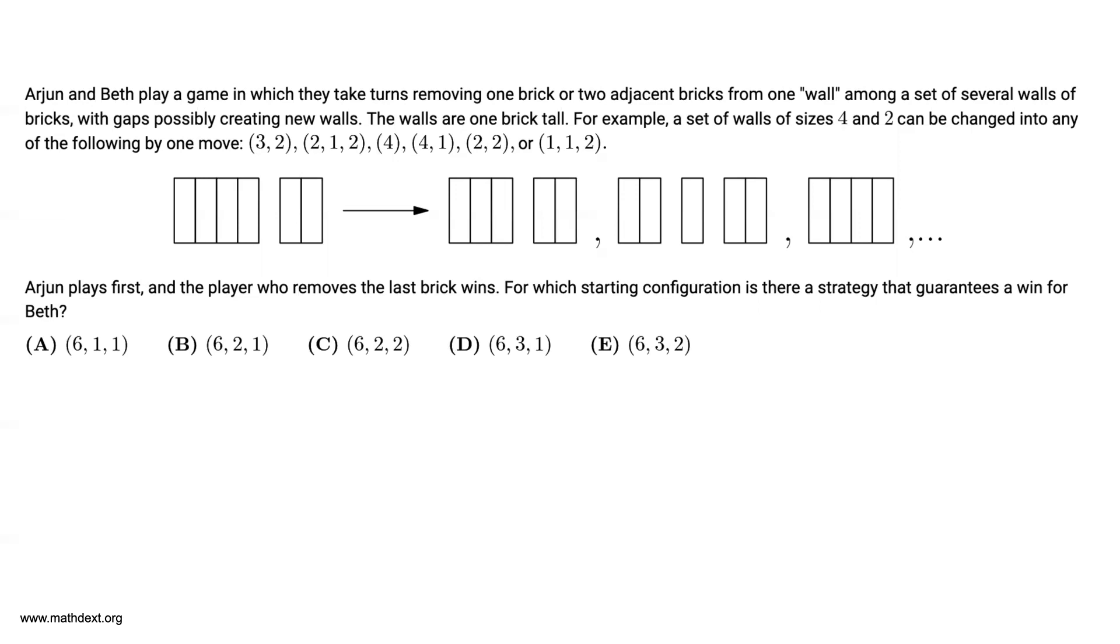a set of walls of size 4 and 2 can be changed into the following by one move: 3-2, 2-1-2, 4-4-1, 2-2, or 1-1-2. Arjun plays first and the player who removes the last brick wins. For which starting configuration is there a strategy that guarantees a win for Beth?